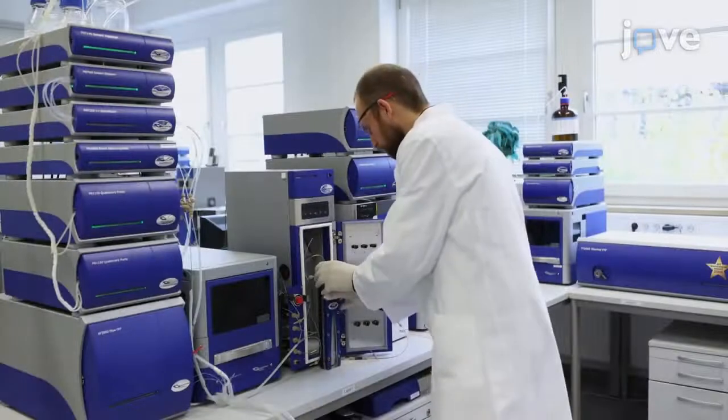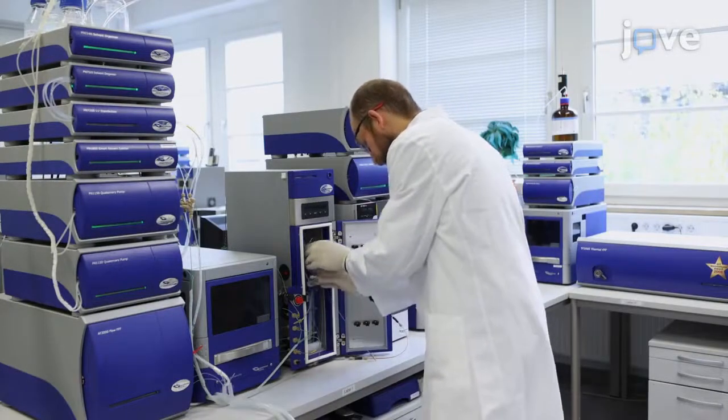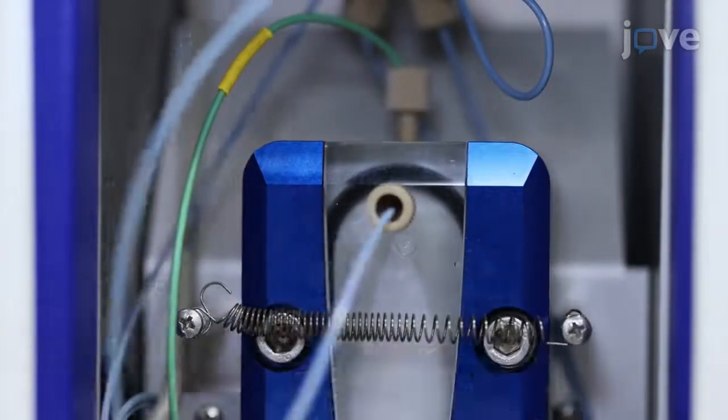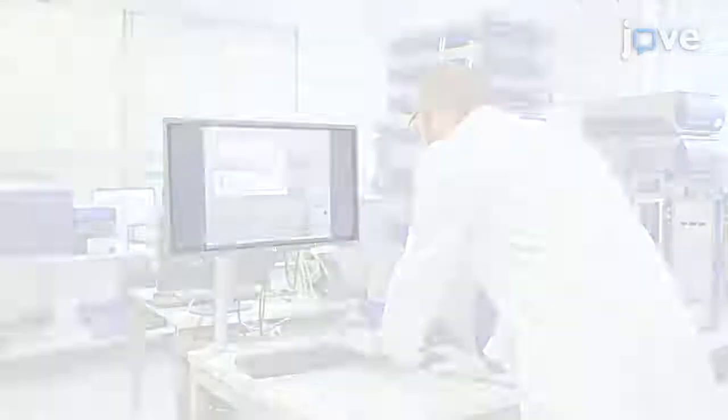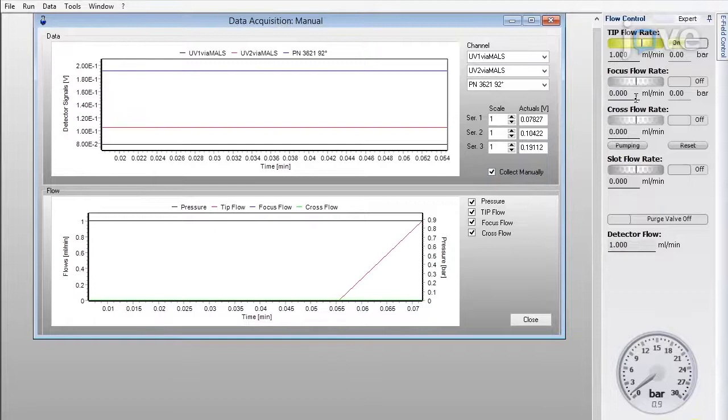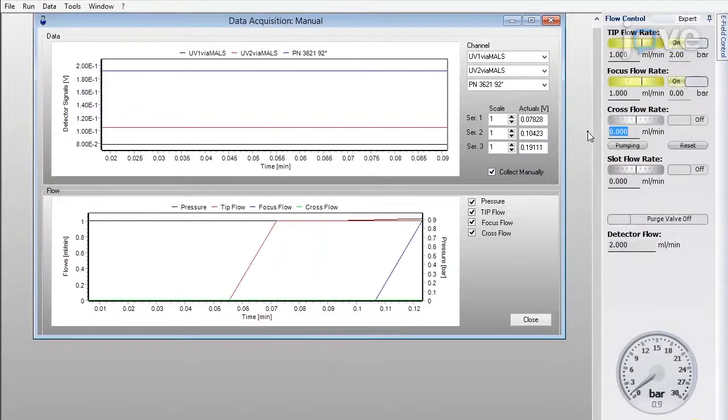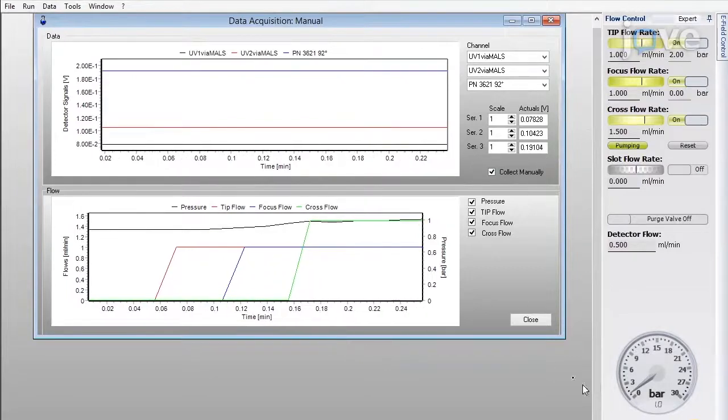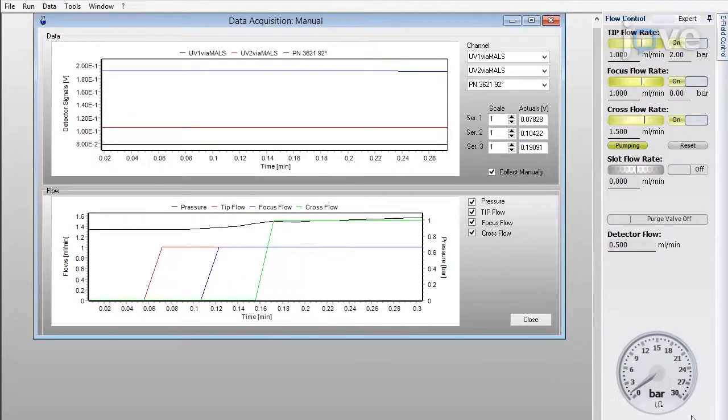Then reconnect the cartridge to the AF4 UV-Vis system. Flush the cleaned system with filtered and degassed eluent for at least 30 minutes by applying a tip flow rate of 1 milliliter per minute, a focus flow rate of 1 milliliter per minute, and a cross flow rate of 1.5 milliliters per minute to equilibrate the membrane, stabilize the system, and check for potential leaks.